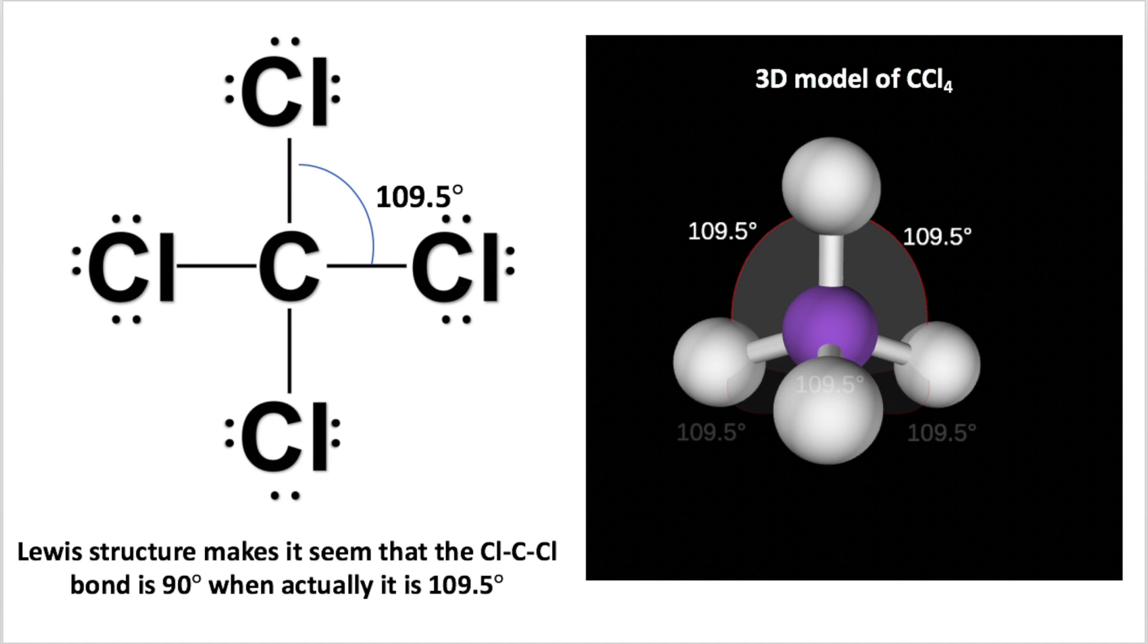This is one of the flaws with Lewis structures. If you try to draw a Lewis structure with four bonds, it would look like the angles between the bonds are 90 degrees. But in reality we need to consider three dimensions. This is why we need to use VSEPR theory when we are discussing electron and molecular geometry, because it gives us a much more accurate view of the shape of the molecule.